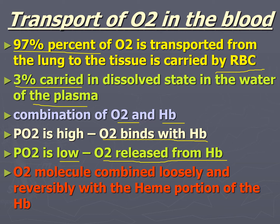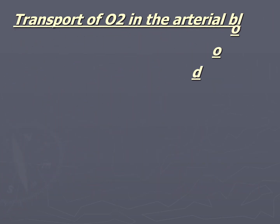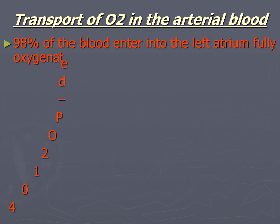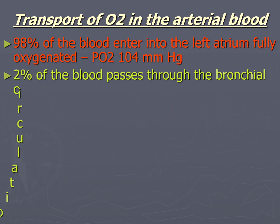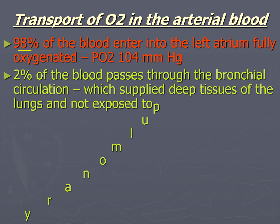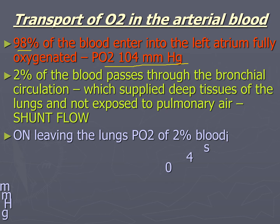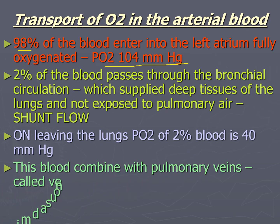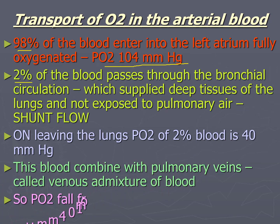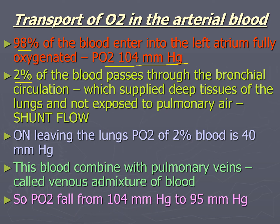Oxygen molecules combine loosely and reversibly with the heme portion of hemoglobin. In arterial blood, 98% of blood entering the left atrium is fully oxygenated, with a partial pressure of oxygen of 104 mm of Hg. The remaining 2% of blood passes through the bronchial circulation, which supplies deep tissues of the lungs not exposed to pulmonary air — this is called shunt flow. The partial pressure of oxygen of this 2% blood leaving the lungs is 40 mm of Hg.